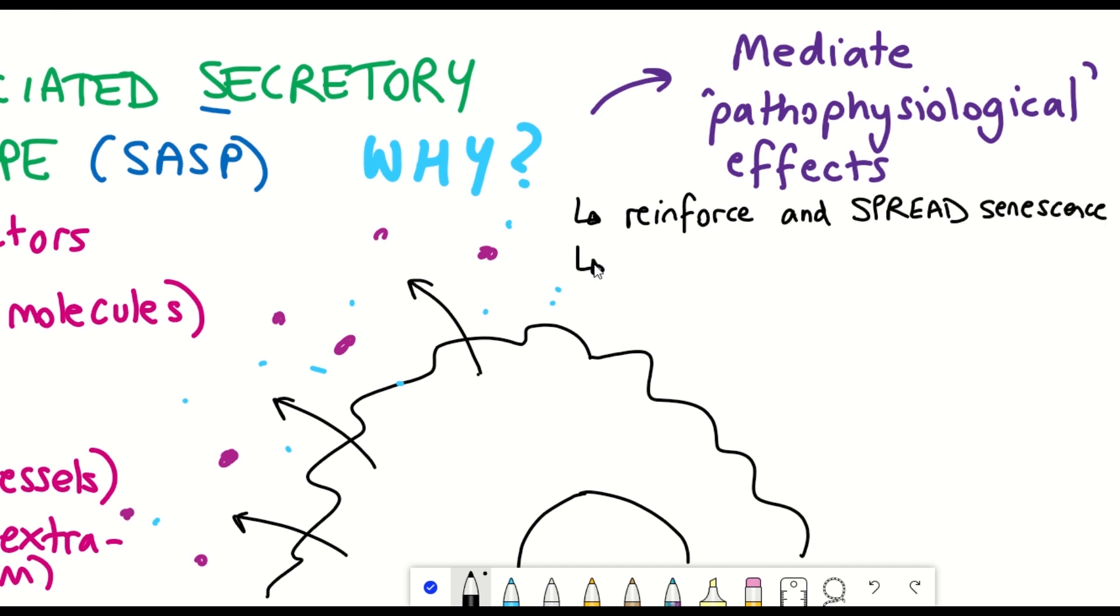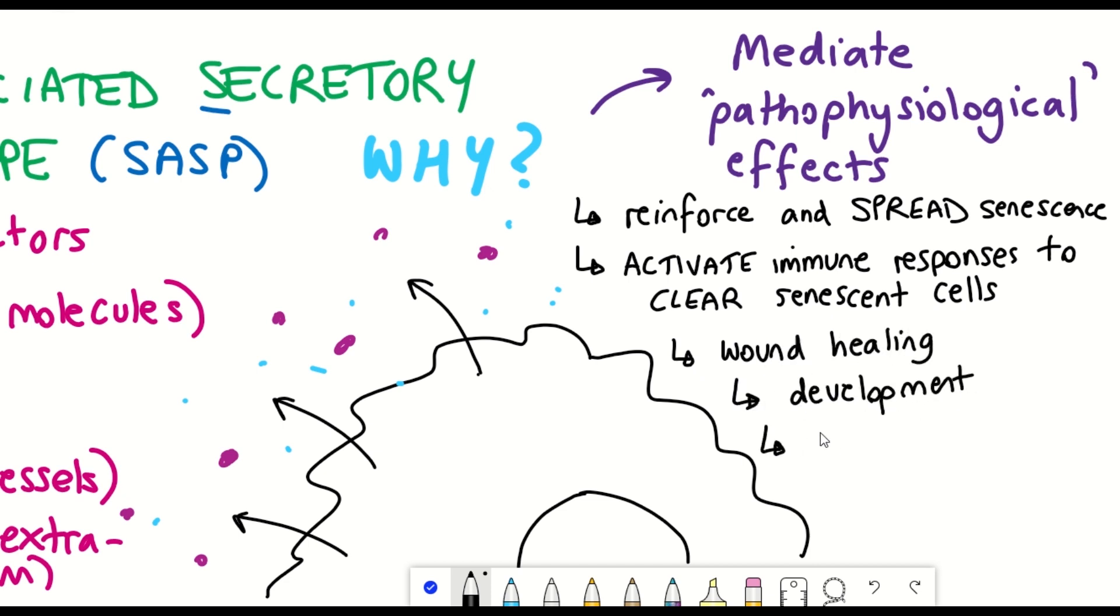Some of these effects include the ability of the SASP to reinforce and cause the spread of senescence to other neighboring cells. It is also thought that the SASP can activate the immune response to help eliminate these senescent cells and to remove them. But senescence and SASP have also been shown to play a key role in wound healing and development.